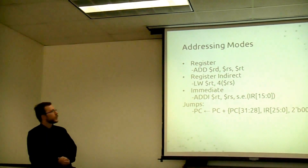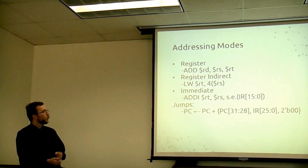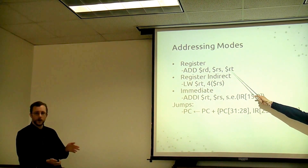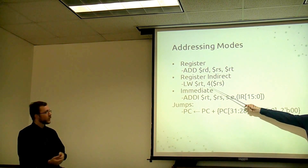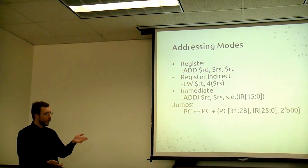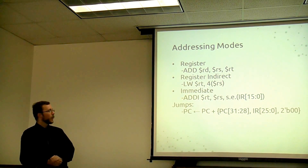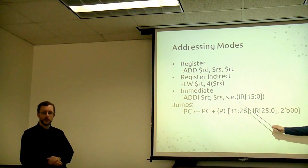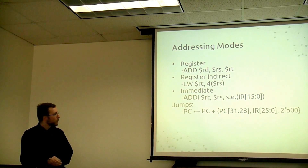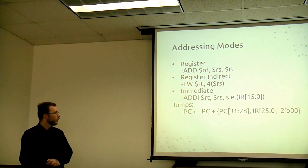Our register addressing mode is by far the most common — using one destination RD and two sources RS and RT. Those are used in arithmetic and logic instructions. Register indirect, used for loads and stores, takes the offset — four in this case — adds it to the base register RS, giving the effective address. Immediate addressing mode is similar to register, except instead of a second register we use a 16-bit immediate from the instruction, sign-extended to 32 bits. Lastly, jumps are mentioned here for clarification.